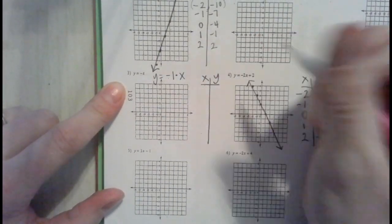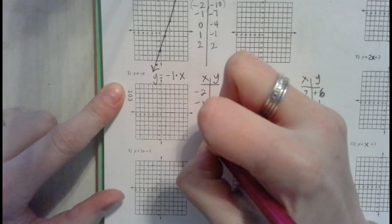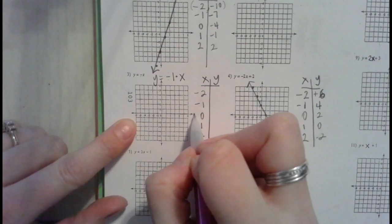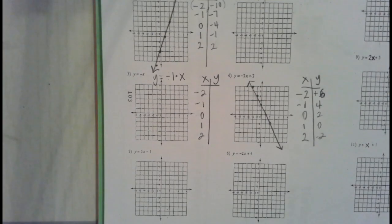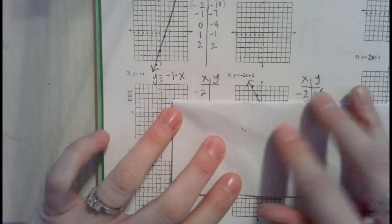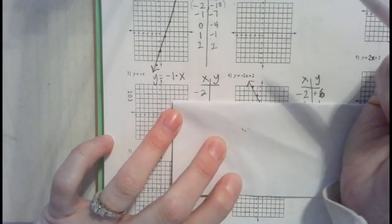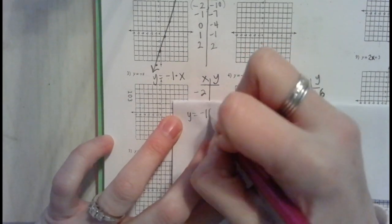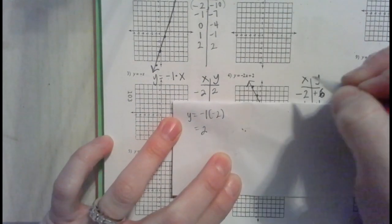We replace x with each value, just multiplying — there's nothing extra to add or subtract. y equals negative 1 times negative 2 is 2. y equals negative 1 times negative 1 is 1. y equals negative 1 times 0 is 0. y equals negative 1 times 1 is negative 1. y equals negative 1 times 2 is negative 2.